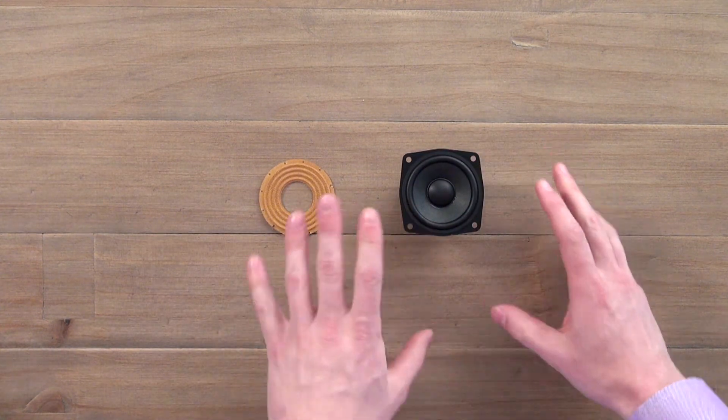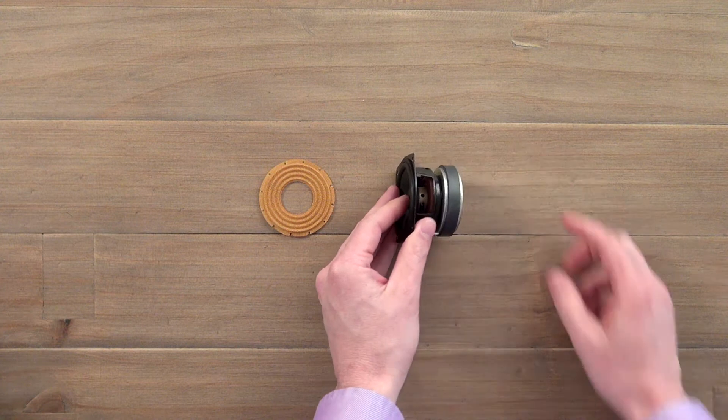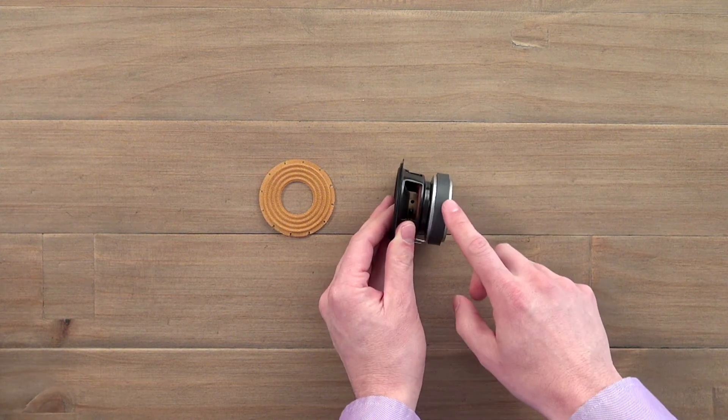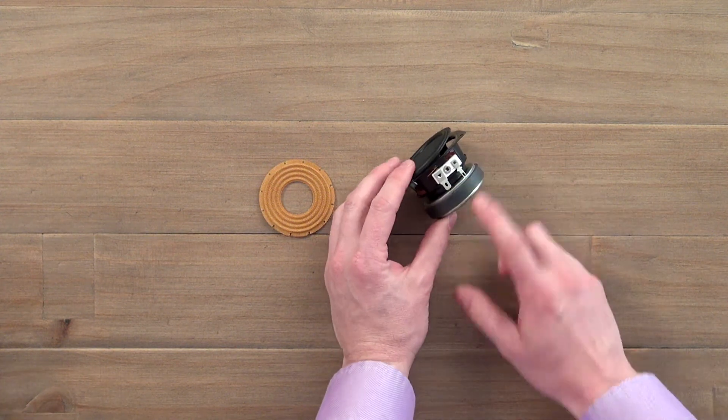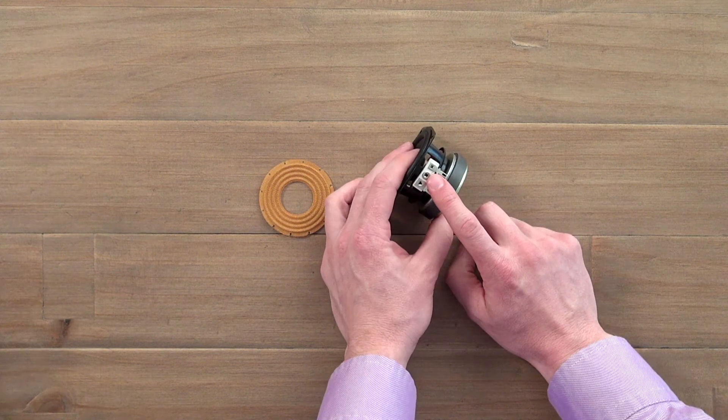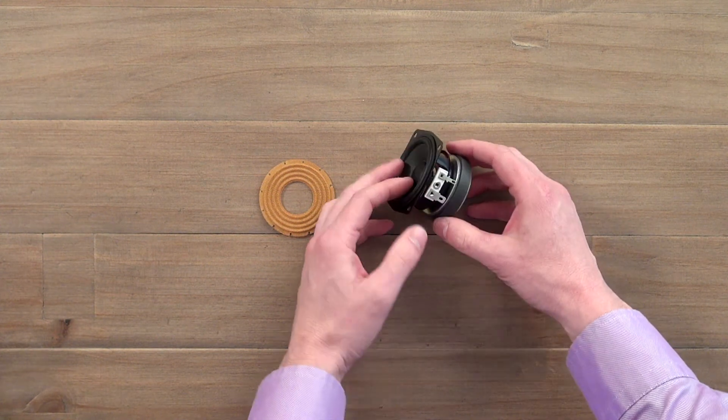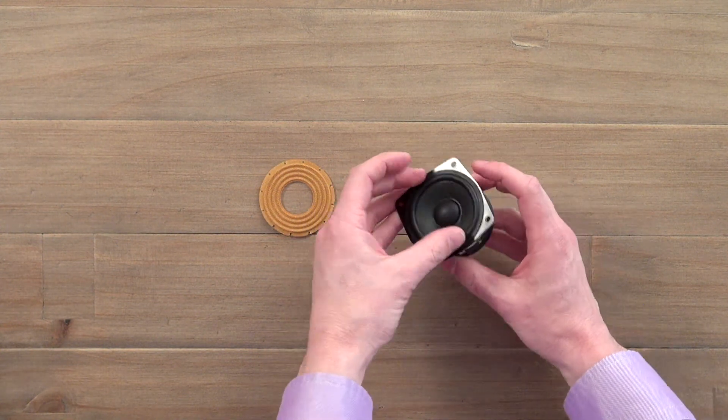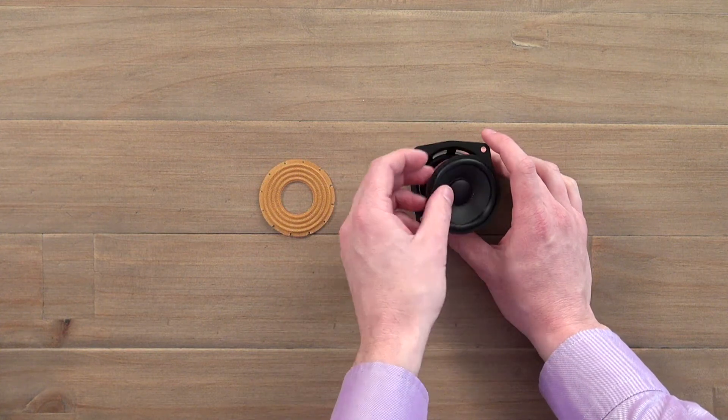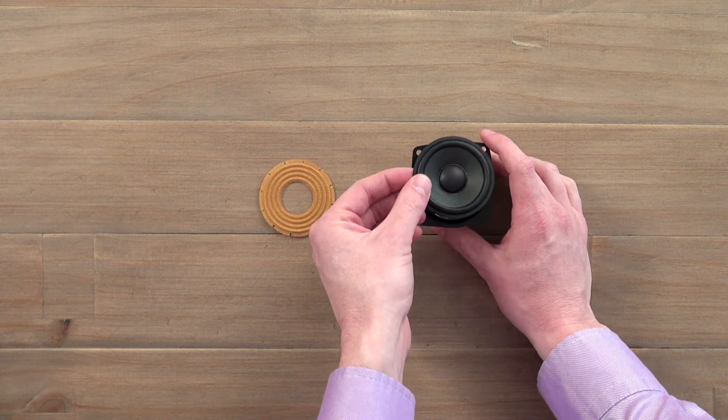So essentially all speakers work in much the same way. They work by having two magnets. So you've got a big fixed magnet on the back there and then you also have an additional electromagnet which is powered by your amplifier. And the idea is that those two magnets repel each other in order to cause the speaker cone to move in and out.